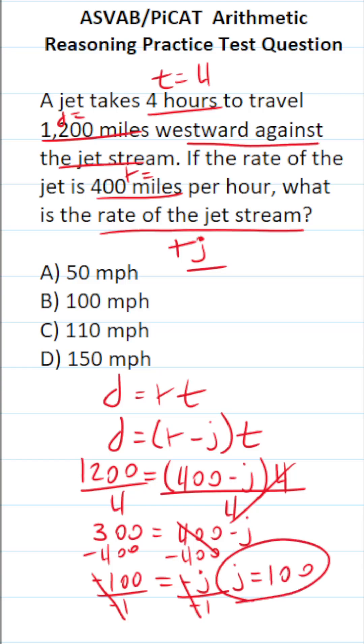So the speed of the jet stream is B, 100 miles per hour.